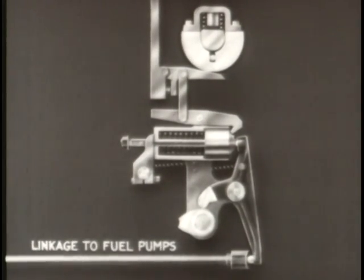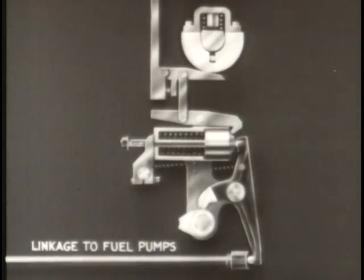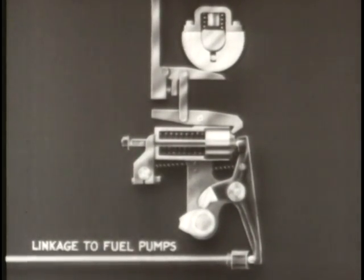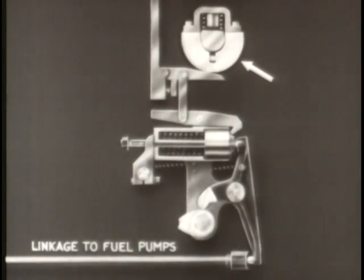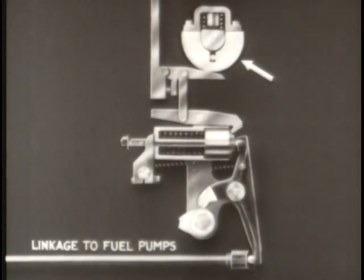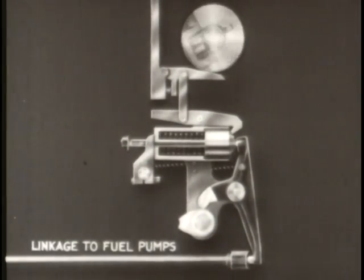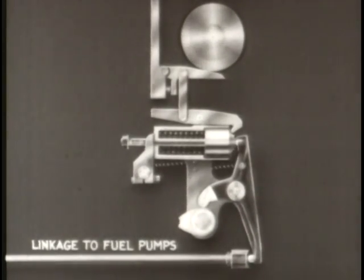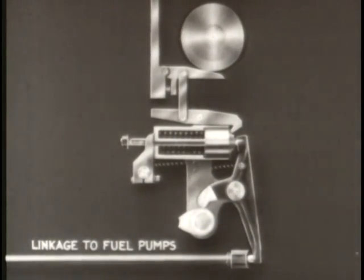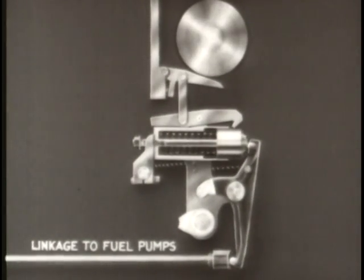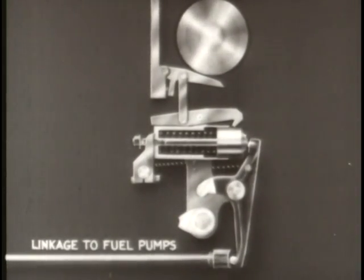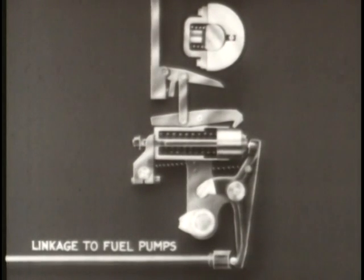One design of overspeed governor, called the overspeed trip, is sometimes used to stop the engine completely when a safe speed is exceeded. This type of overspeed trip has only one flyweight, also working on the principle of centrifugal force. While the engine operates at a safe speed, the rotating flyweight is held close to the drive shaft by a spring. As soon as the engine overspeeds, the flyweight moves outward and trips a latch, causing the fuel supply to the injection valves to be shut off and the engine stops.